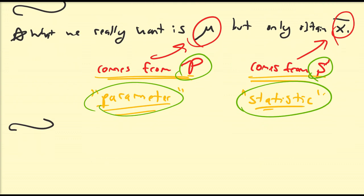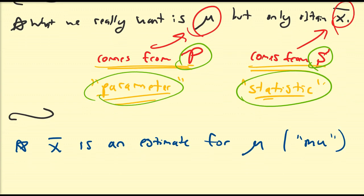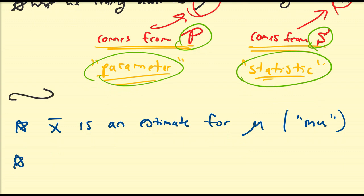A couple notes here. First off, x-bar is an estimate for mu. This is Greek letter mu. And in general, statistics are estimates for parameters.